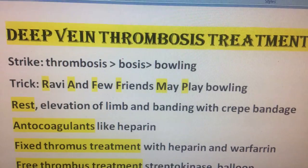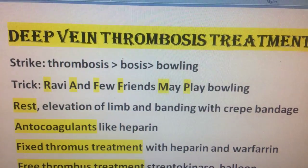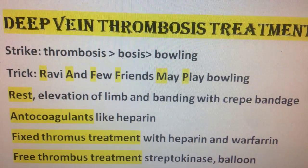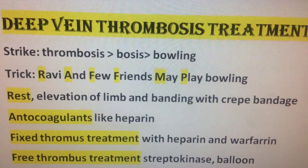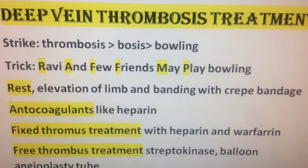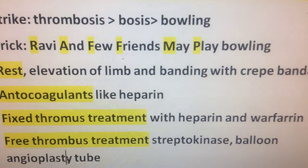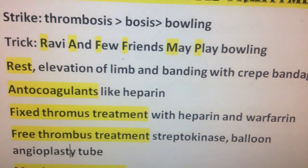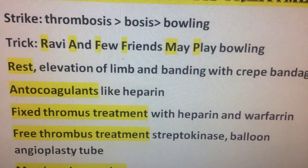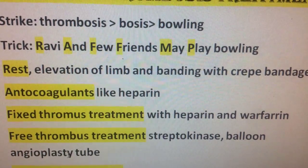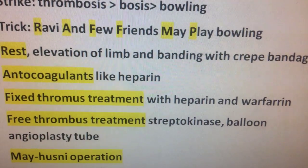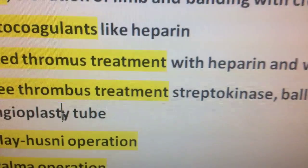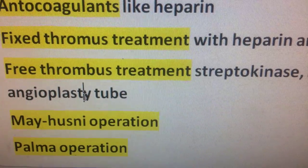Anti-coagulants like heparin: fixed thrombus is treated with heparin and warfarin; free thrombus is treated with streptokinase and balloon angioplasty. Surgical options include Hasney's operation and Palmer operation.